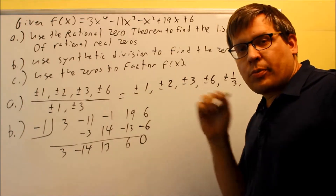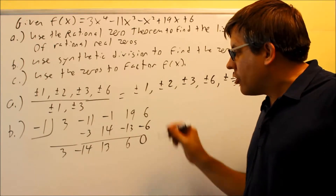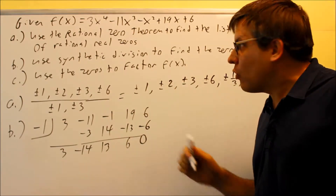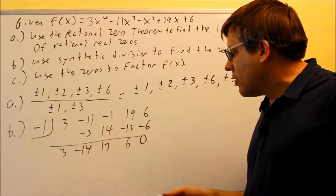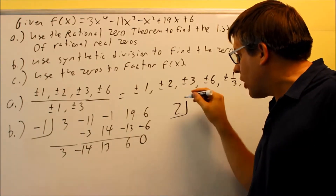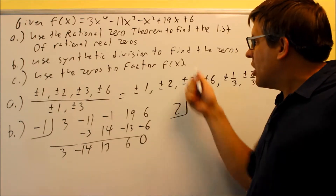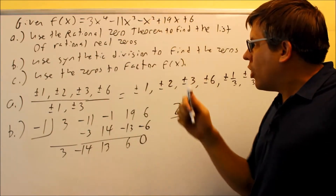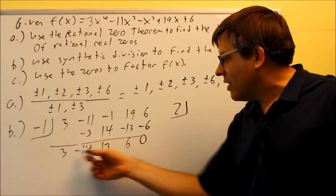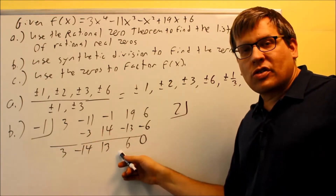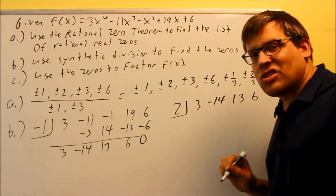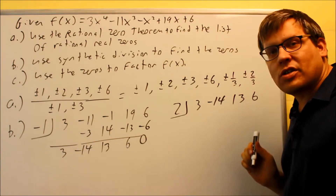Looking at the graph, I see there's another place where it crosses. I need at least one more zero, because right now if I put x's back in I'd have x cubed, but I want to get down to x squared. So I have to do synthetic one more time. The other number I notice from the graph is that it crosses at 2. Instead of using the original polynomial again, I'm going to take the result from the first synthetic division — 3, negative 14, 13, and 6 — and put those numbers in for the second synthetic.